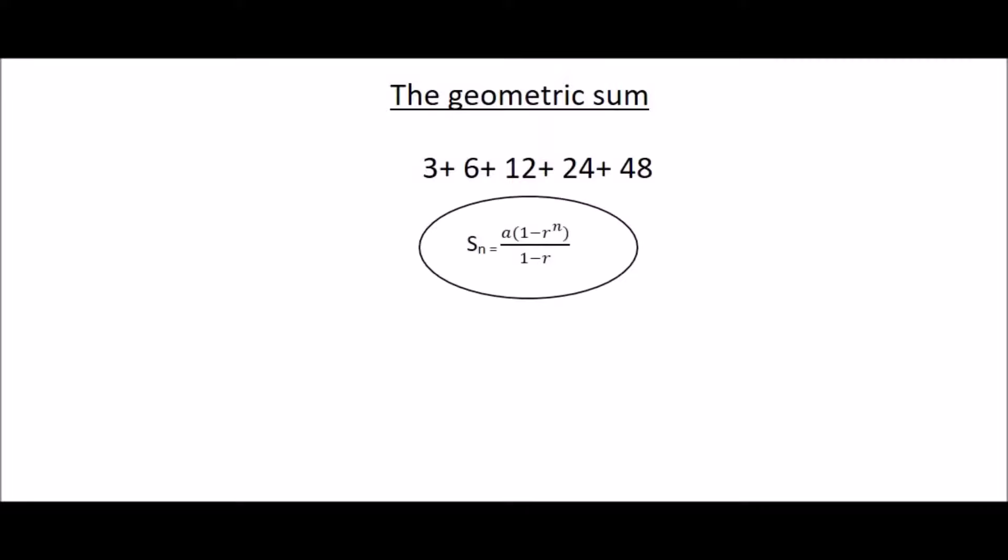Where Sn stands for the sum, A is term number 1, R is your ratio which is the number that you multiply each time and N is your position.